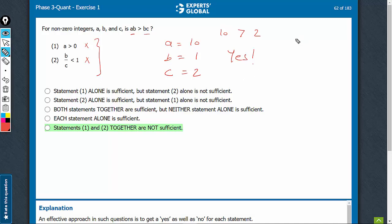However, for a set of values such as a is equal to 10, b is equal to negative 1, and c is equal to negative 2. See, both the conditions are met. a is greater than 0, which is 10. b upon c is less than 1, the value is half.